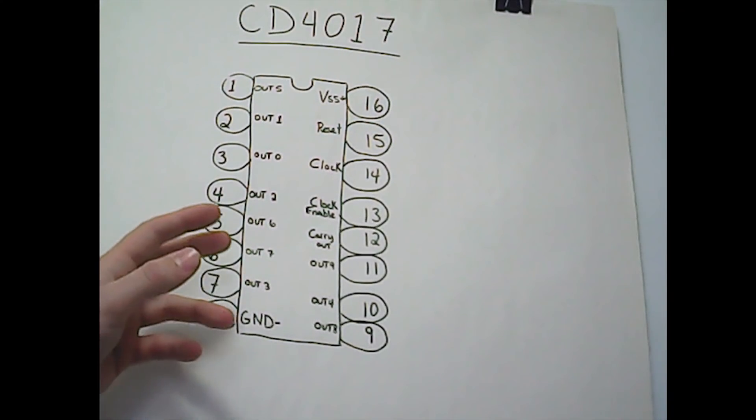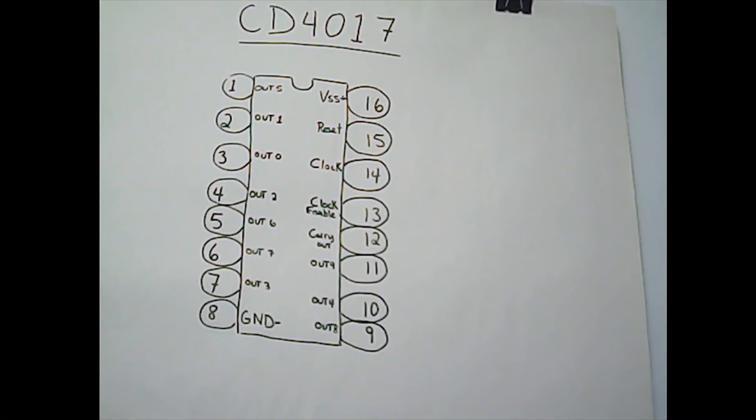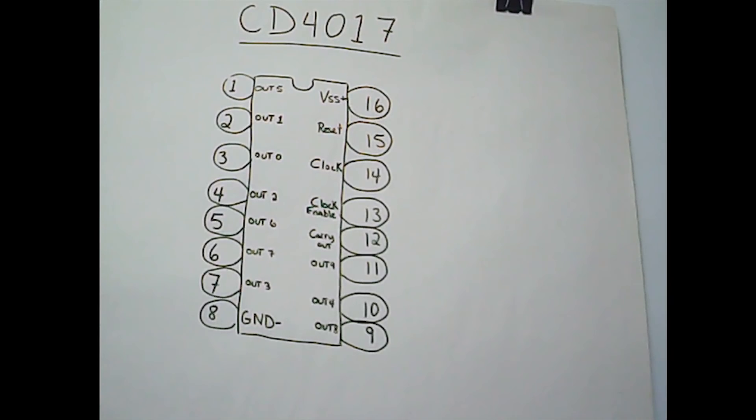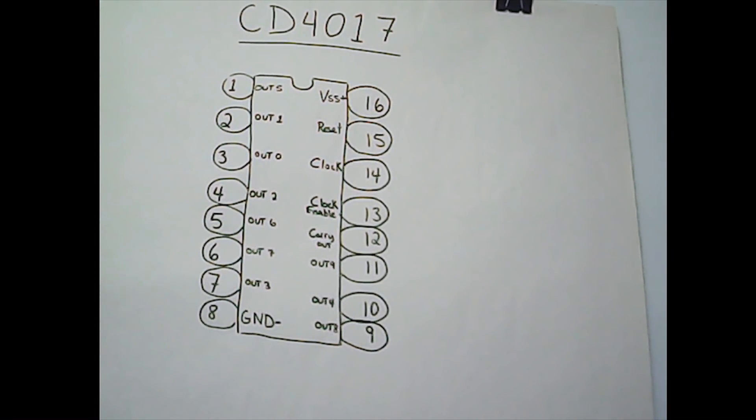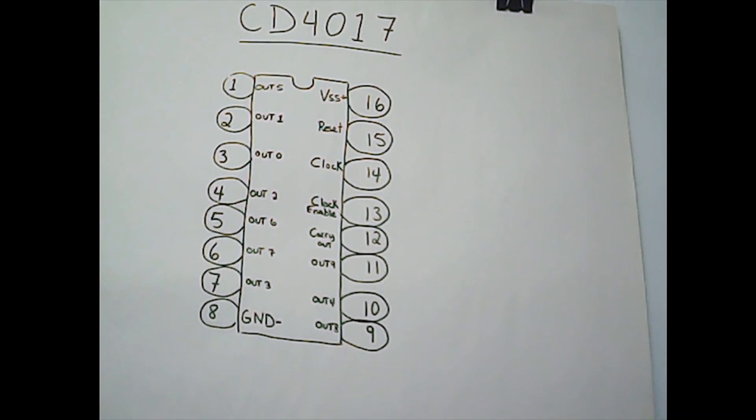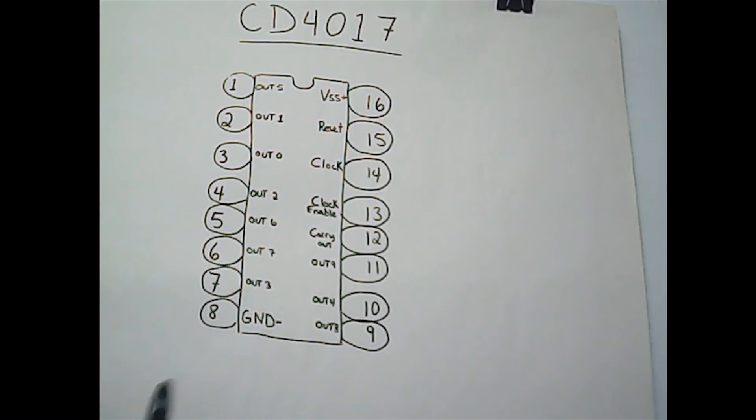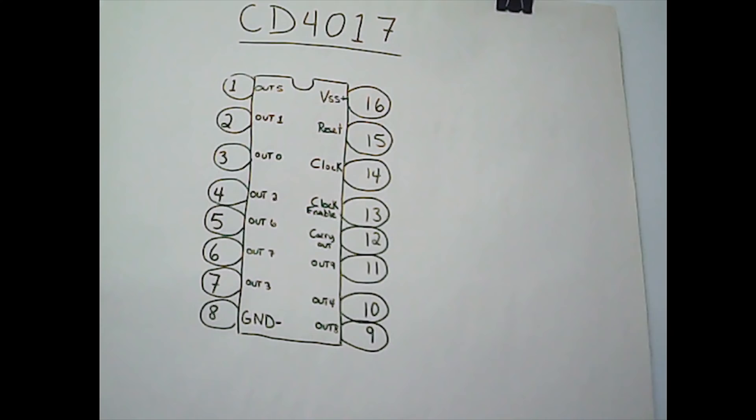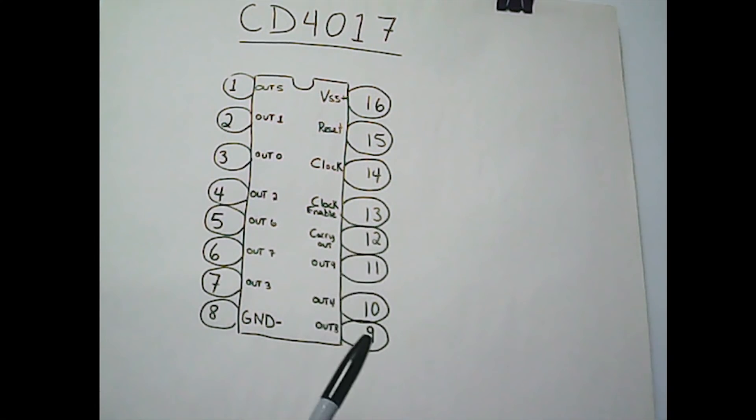This is the CD4017, a decade counter divider. It's not that complicated. The main function of this IC is to count from 0 to 9. It will count at a speed given by the clock. Once it's reached 9, it goes back to zero.